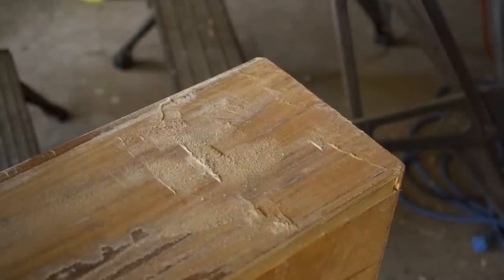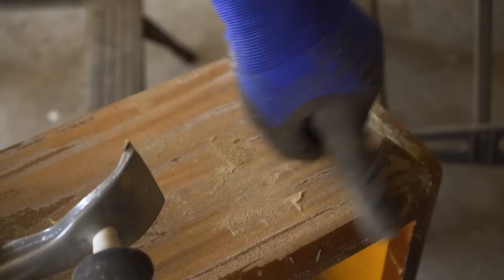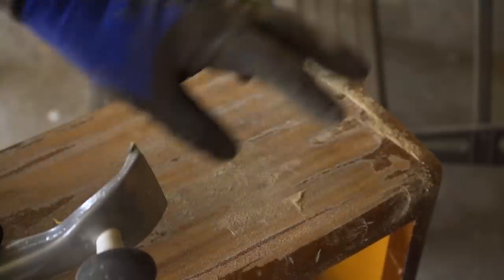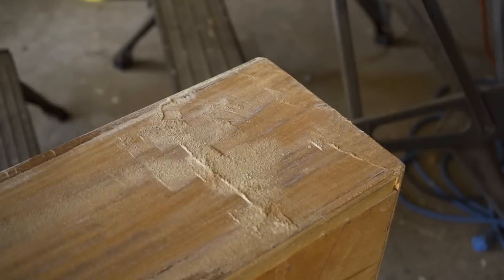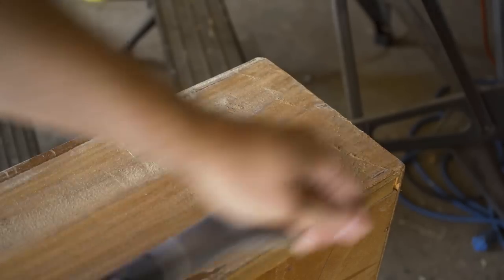Especially if you're working with veneer, which this is, at least this part. This part is solid mahogany, but this part's veneer. It's really easy to go through the veneer with an electric sander, especially on the edges. So in my opinion, this is way safer than sandpaper, also faster usually.